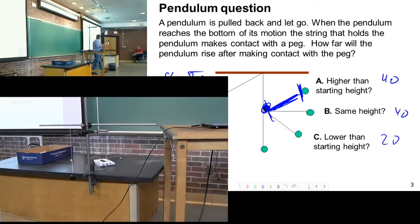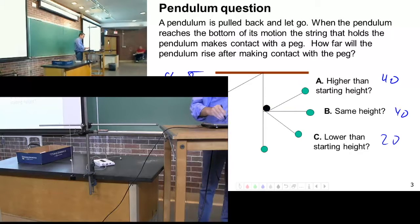What about C? Those of you who chose C? So you're using the energy argument that the peg may actually take energy away, therefore it'll go lower.